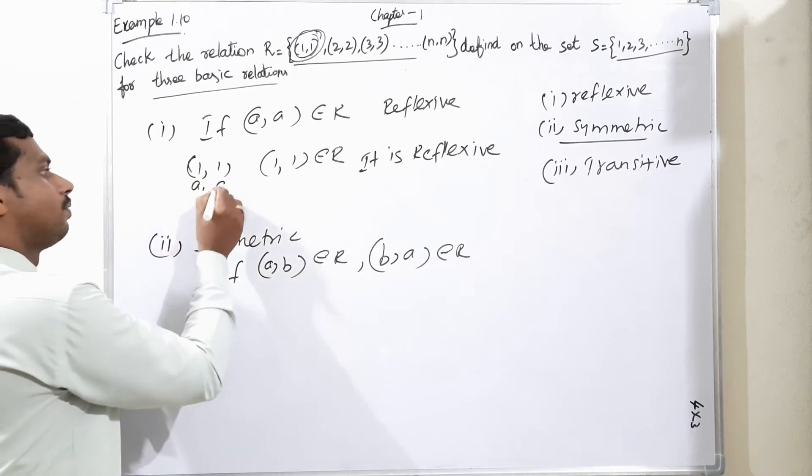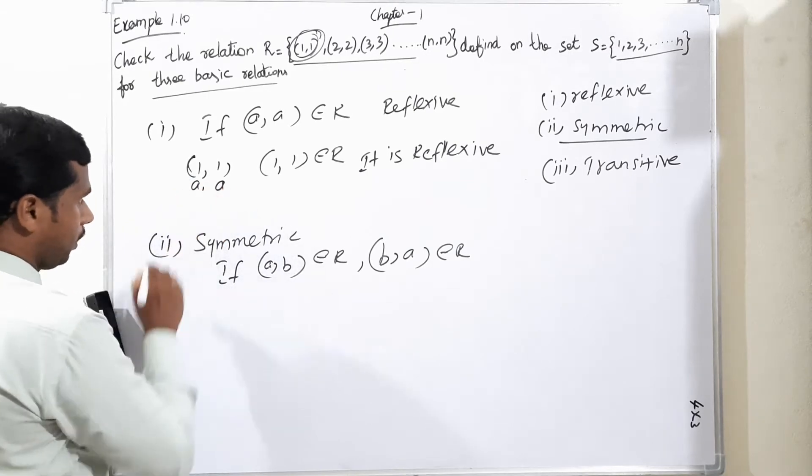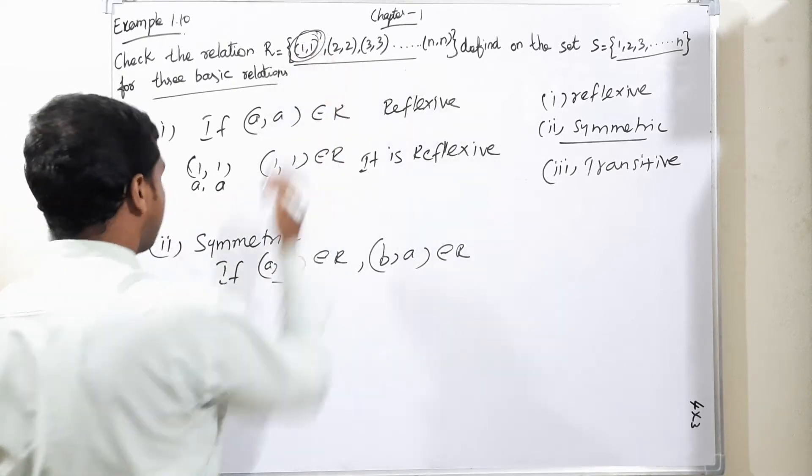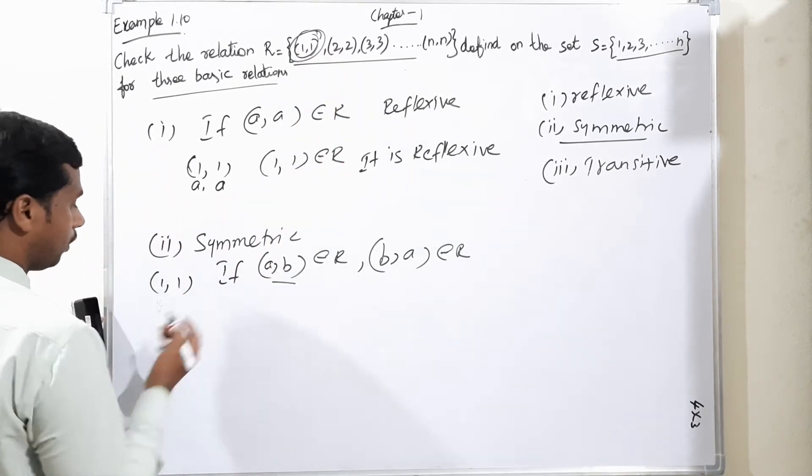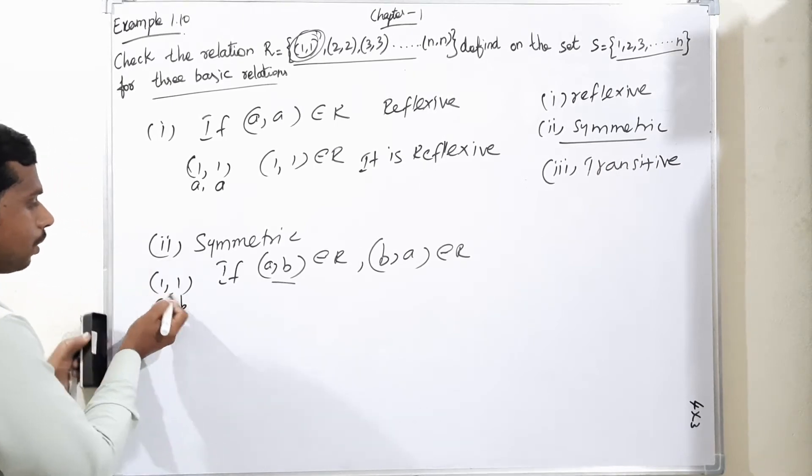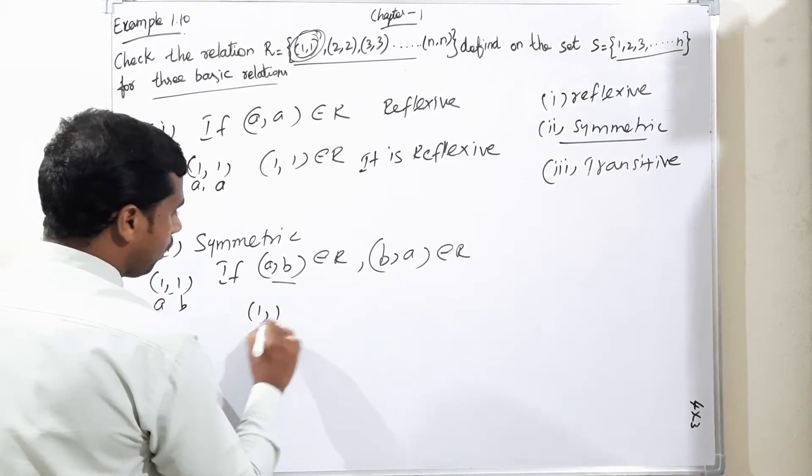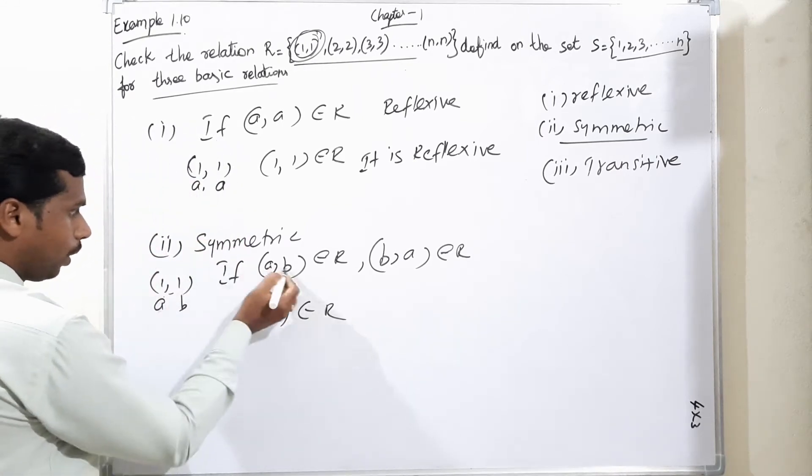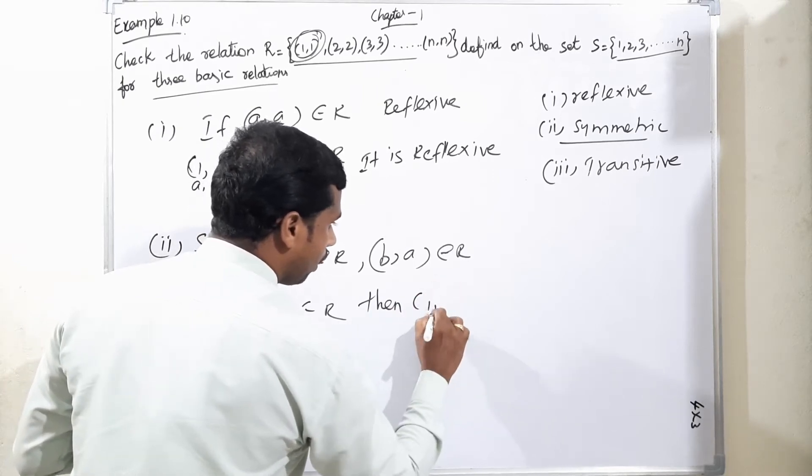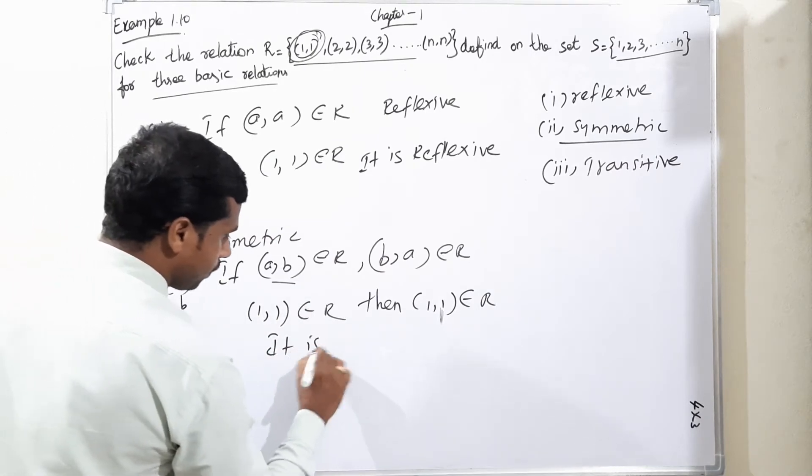We already considered the first set (a,a). Comparing with the first set, the first one is (1,1). If we consider a equals 1 and b equals 1, then if you are interchanging also (1,1), the same value will repeat. So definitely (1,1) belongs to R, then again (1,1) also belongs to R. That is why it is symmetric.